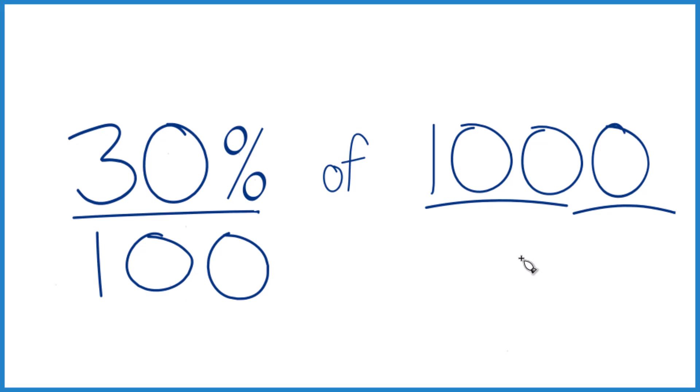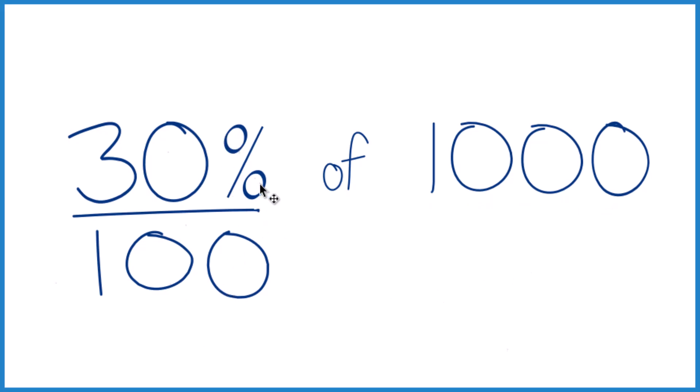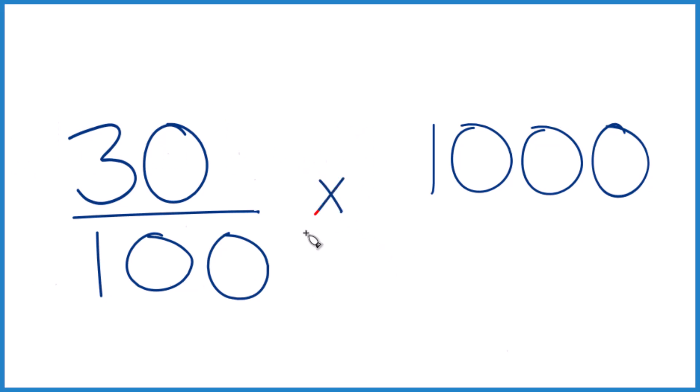You could also do it this way. 30%, that's 30 over 100, and 'of' we're going to call multiplication. Let's multiply by 1,000 over 1. It's still 1,000, but everything lines up real nice.